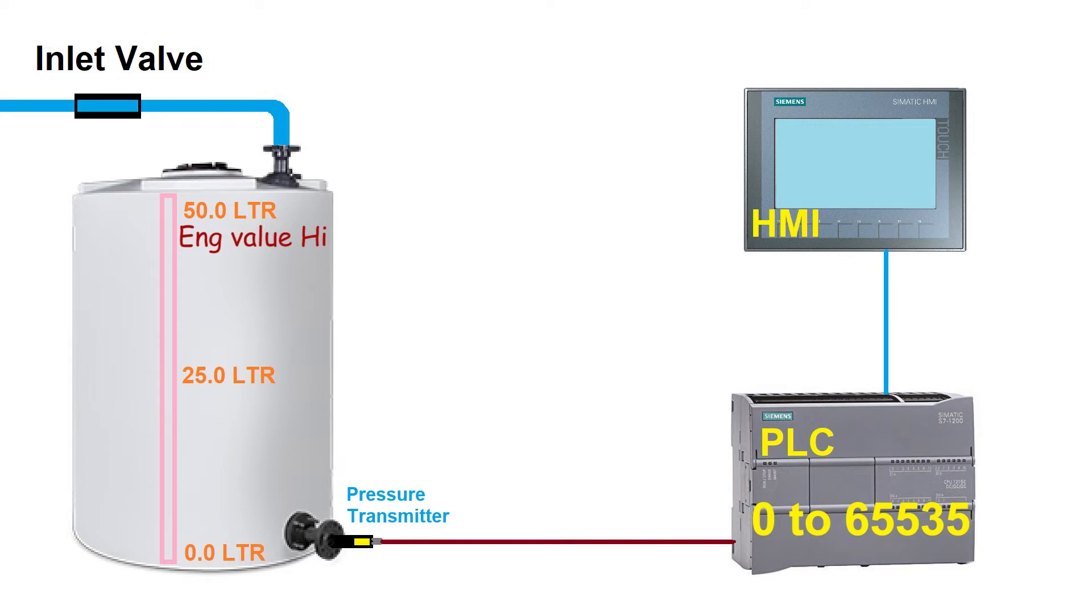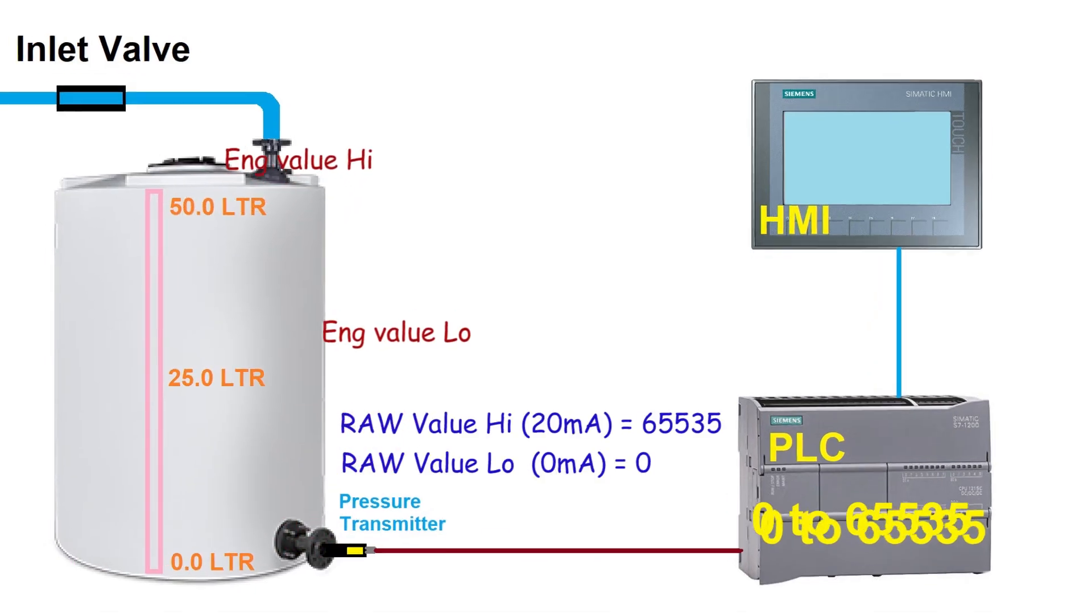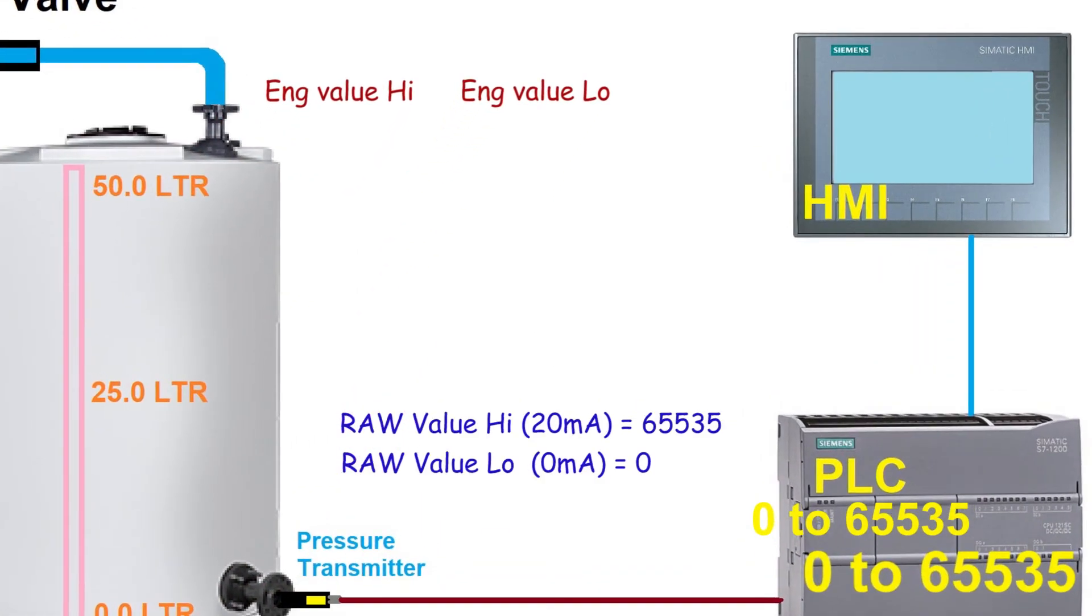So we have here engineering high value which is 50 liters and low value is 0 liters. It is the minimum and the maximum values for the tank level. First we will take engineering high value and then minus engineering low value which is 50 minus 0 equals 50 liters.